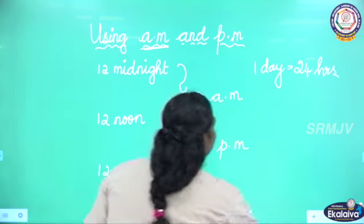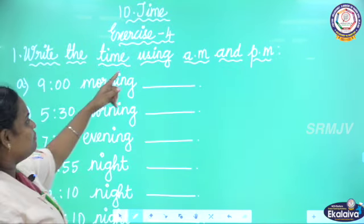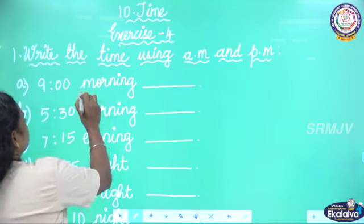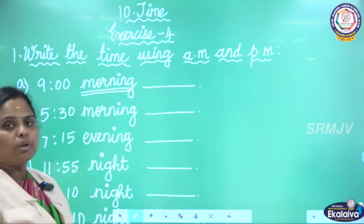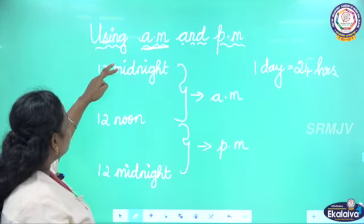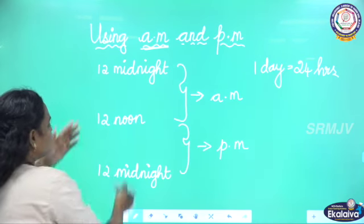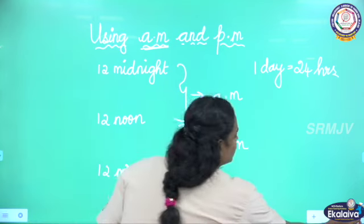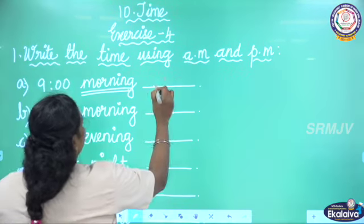So we are going to write this in Exercise 4: Write the time using AM and PM. 9 o'clock in the morning — morning means 12 midnight to 12 noon — so 9 o'clock morning is AM.